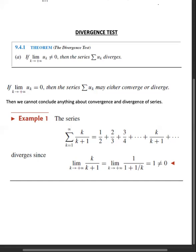Taking k as a common factor, k cancels, giving the limit as k tends to infinity of 1/(1 + 1/k). As k tends to infinity, 1/k tends to zero, so the limit equals 1, which is not equal to zero. This implies the series summation k/(k+1) is divergent.